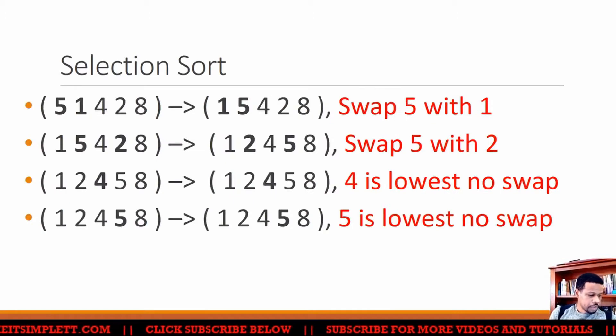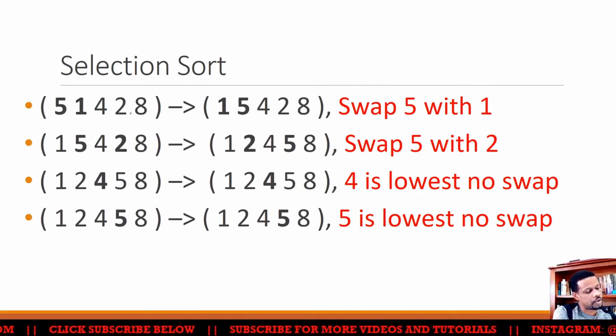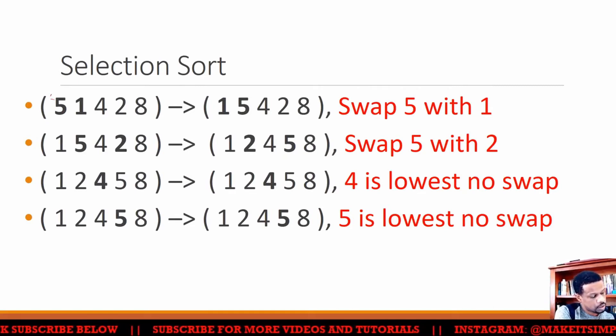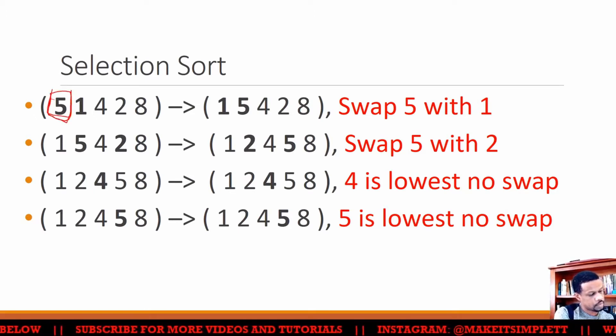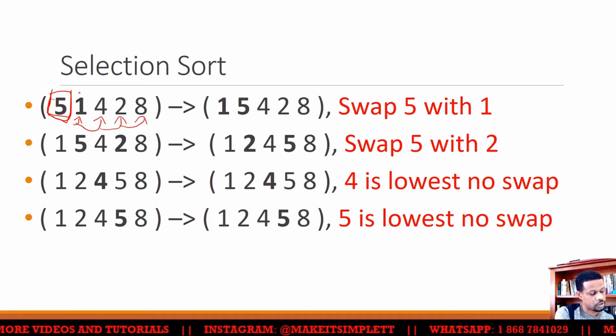Okay, so slow motion. Now we have the numbers 5, 1, 4, 2, and 8. I'm going to check this 5 and then check through all the numbers. I saw the 1 is the smallest. I have a 4, I have a 2, I have an 8. Therefore the 1 is kept as the smallest, so I'll swap the 5 with the 1.